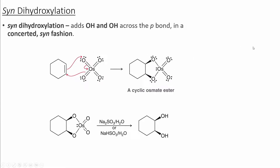The next reaction that we'll look at is the syn-dihydroxylation. In this reaction, the two alcohols will form new bonds from the same face of the pi bond, in a syn fashion. This means that both oxygens are approaching the molecule from the same side.